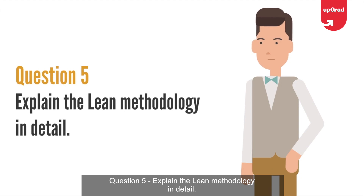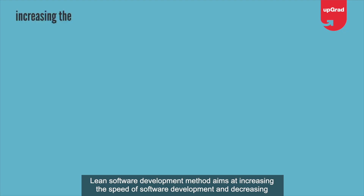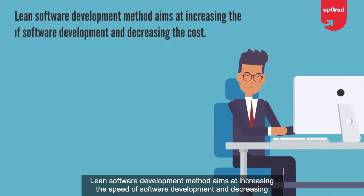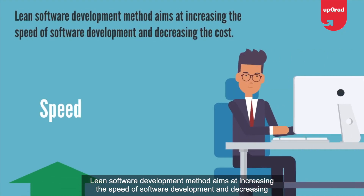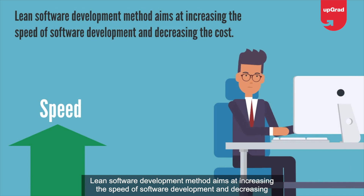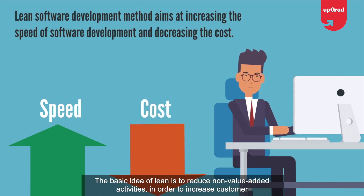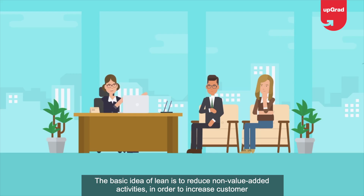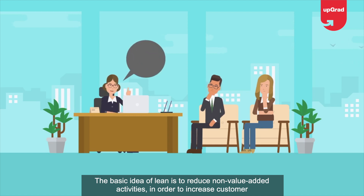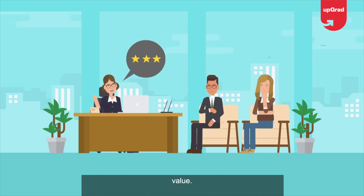Question 5: Explain the Lean methodology in detail. Lean's software development method aims at increasing the speed of software development and decreasing the cost. The basic idea of Lean is to reduce non-value-added activities in order to increase customer value.